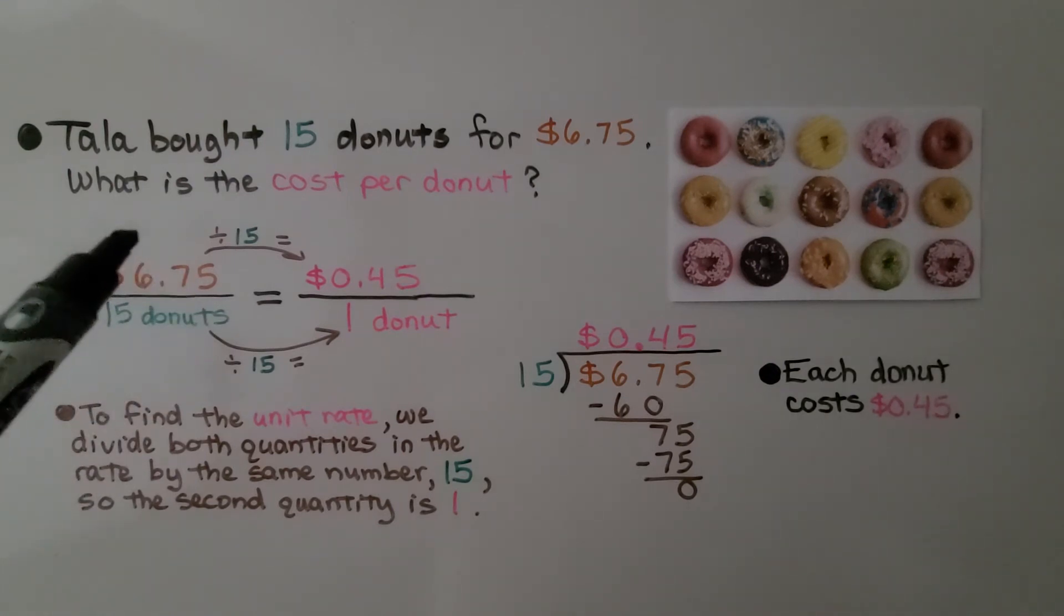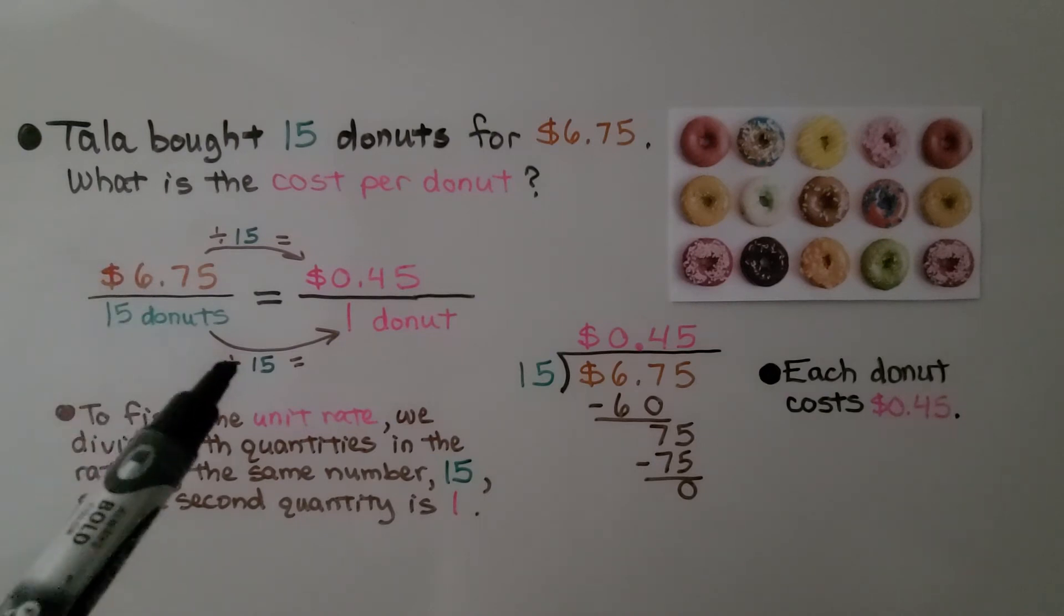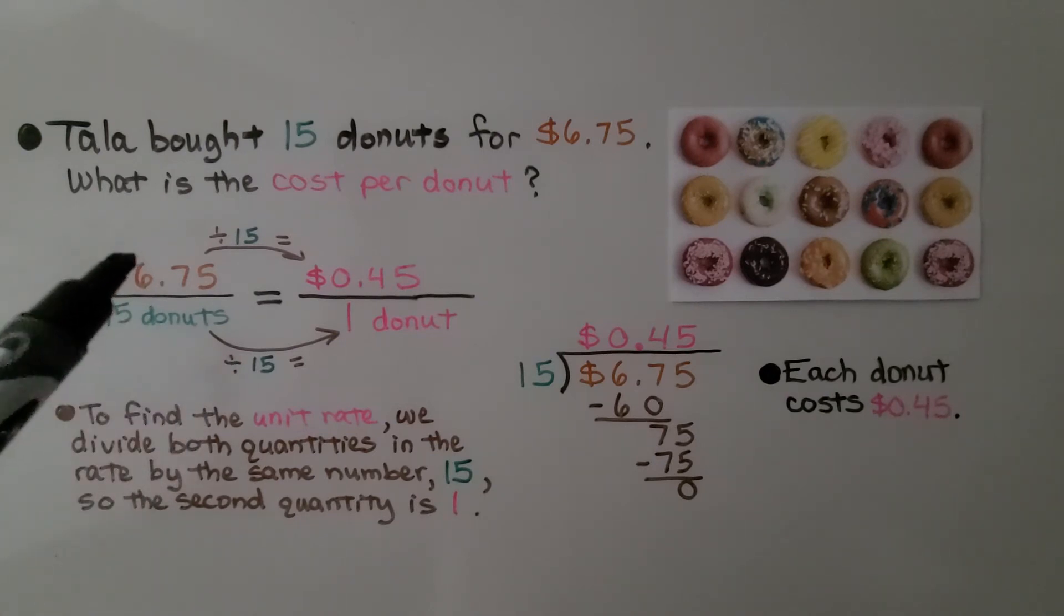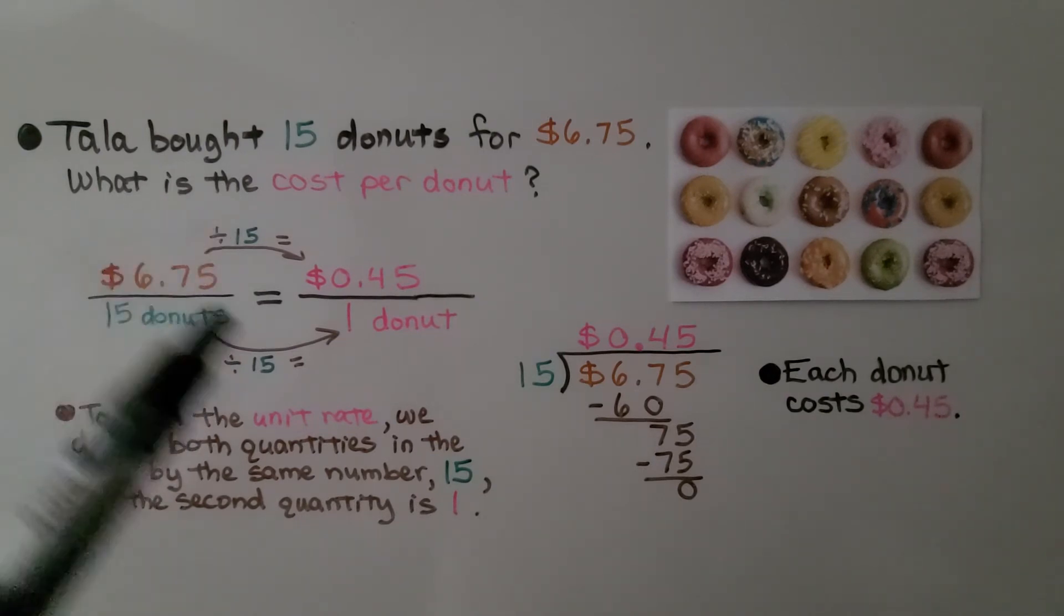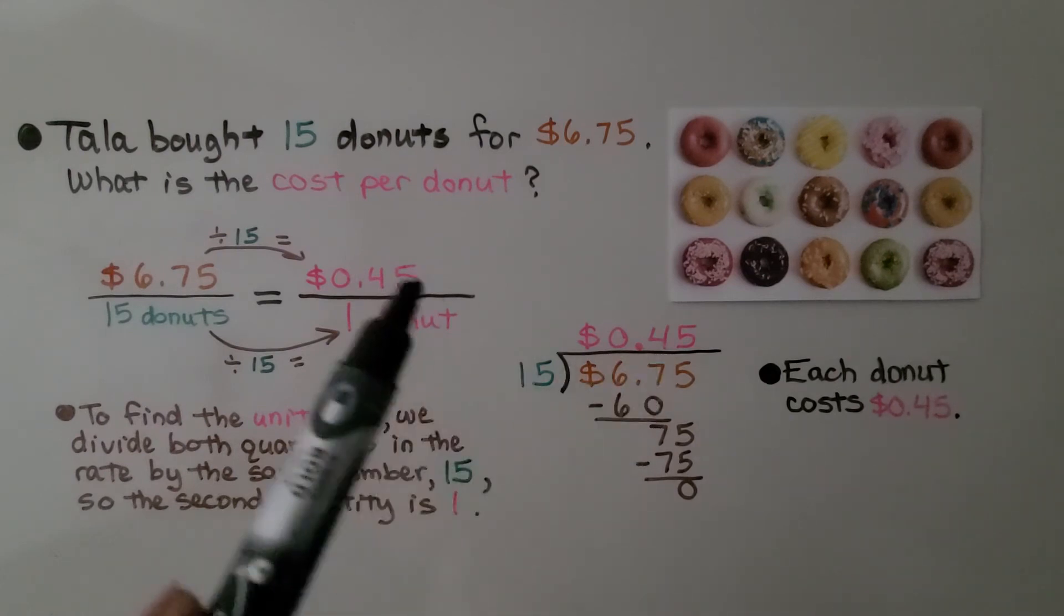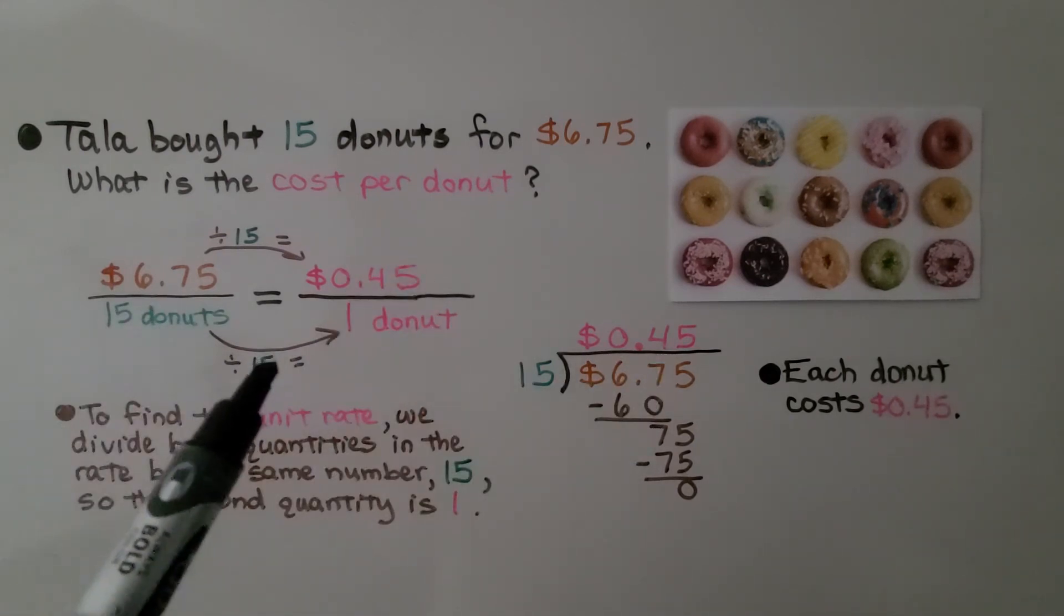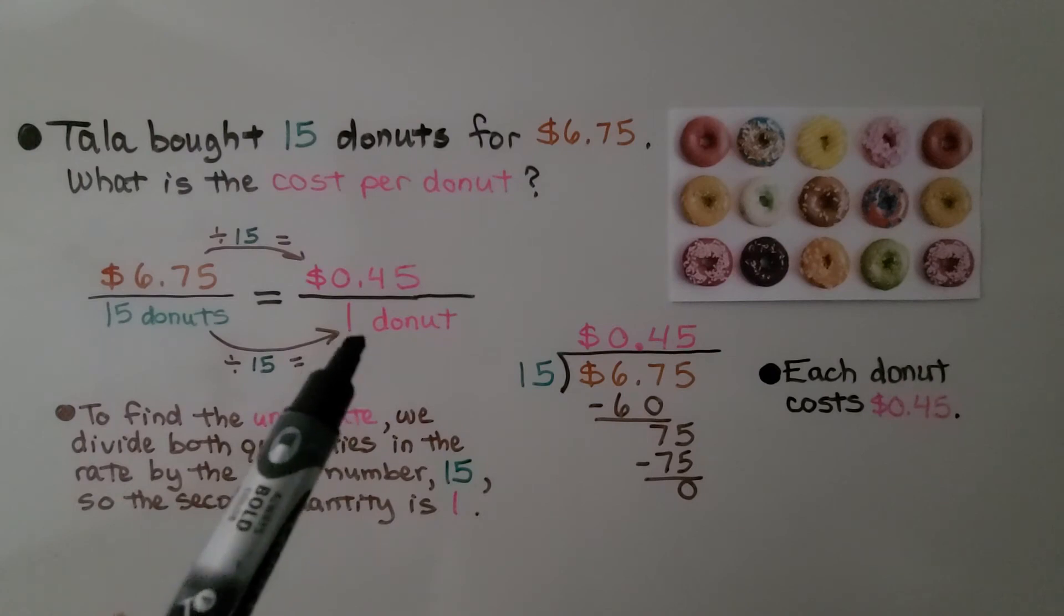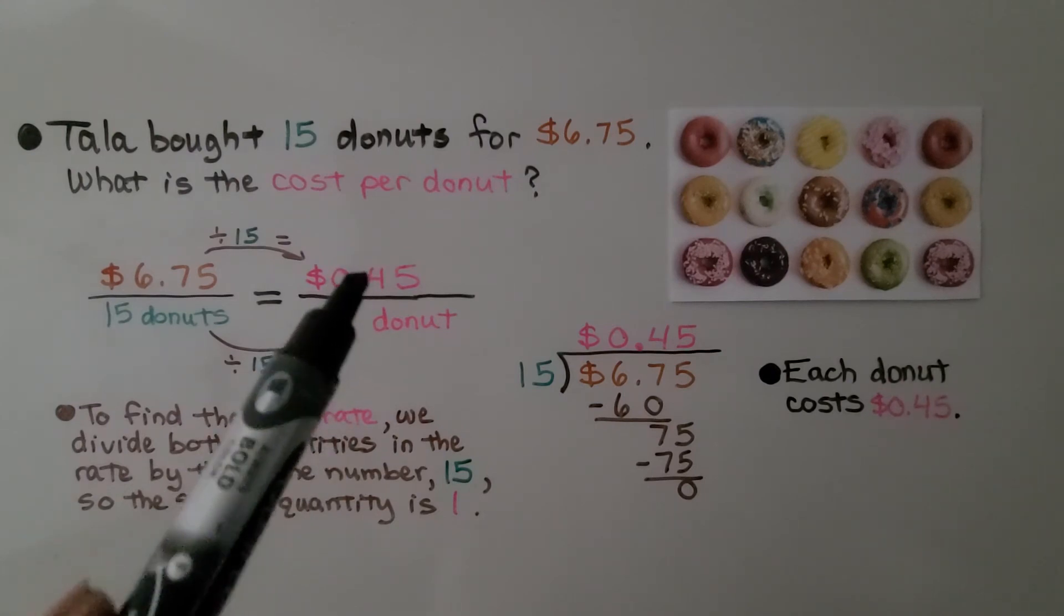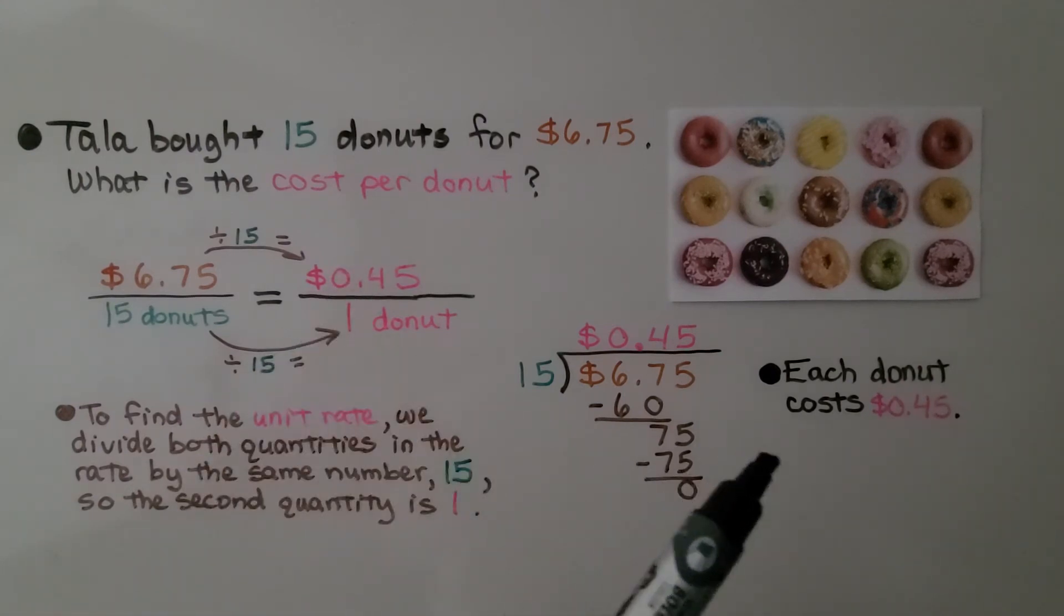We're going to divide both the numerator and denominator by 15. $6.75 divided by 15 is 45 cents. And 15 divided by 15 is 1. Our second number is 1. The unit rate is 45 cents. So we know each donut costs 45 cents.